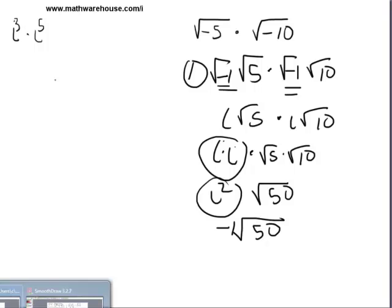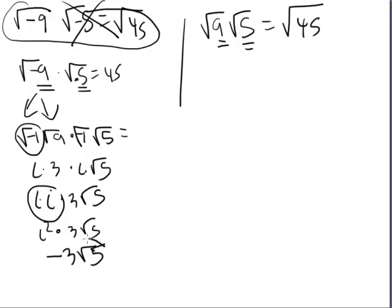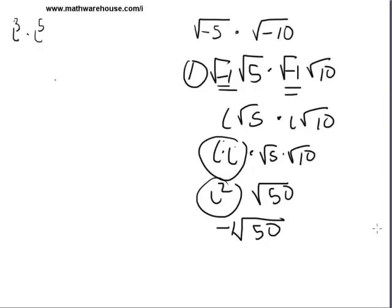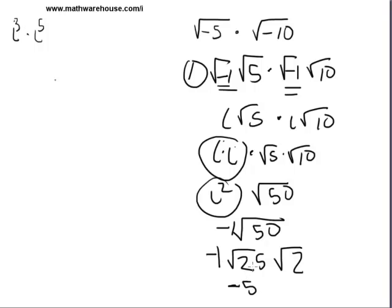Unlike the first example, we could not simplify the square root of negative five directly. However, we can simplify the square root of 50. At the end, we just have to double-check: can we simplify our final radical? The square root of 50 becomes square root of 25 times square root of two. Square root of 25 is five. So you end up with negative one times five root two, which is negative five root two.